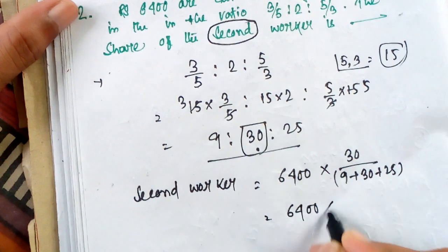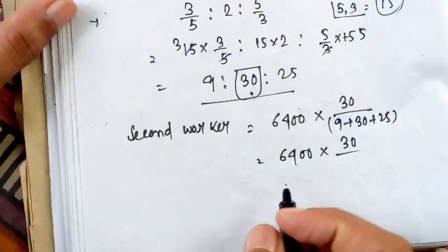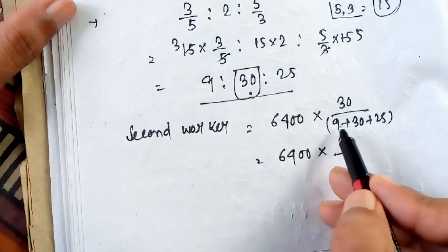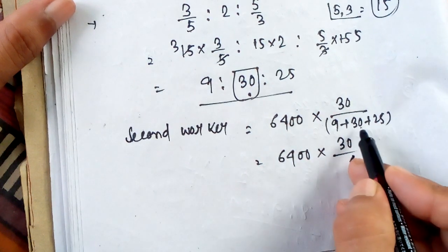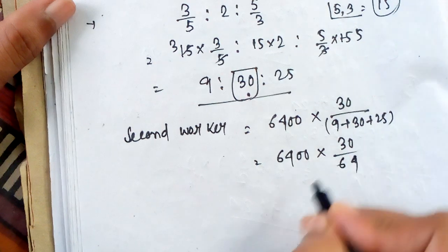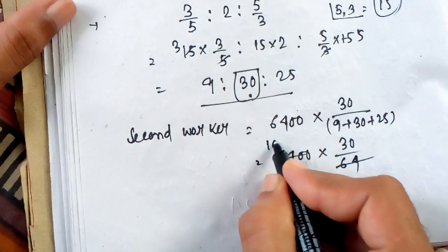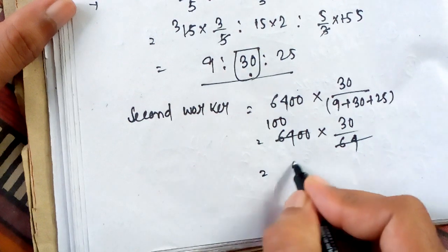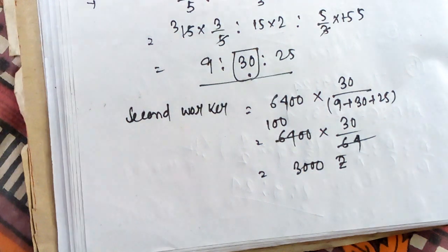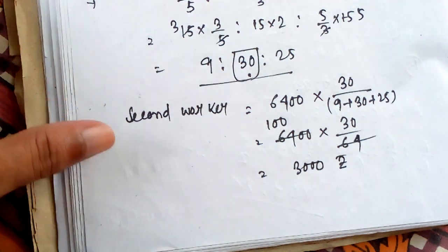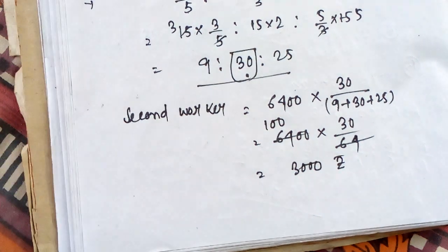And here's the solution of your problem. The total is 64. So, divide it here. And what will be the answer? The second worker share is 3000 rupees only.